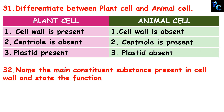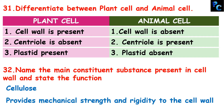Name the main constituent substance present in the cell wall and state its function. Cellulose is the main constituent substance present in the cell wall, and it provides mechanical strength and rigidity to the cell wall.